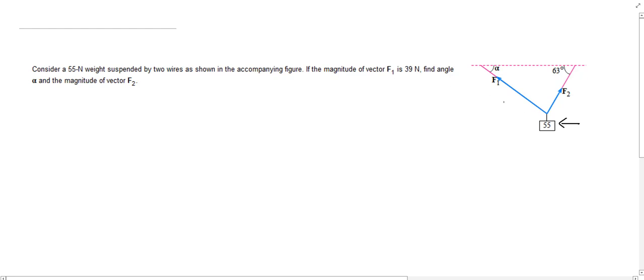And we have the magnitude of one of the wires given. So the magnitude of F1 is 39 Newtons. And then we're asked to find the angle right here formed between the ceiling and this wire for F1. And we also know that this angle here with this other wire is 63 degrees and we want the magnitude of this vector F2.